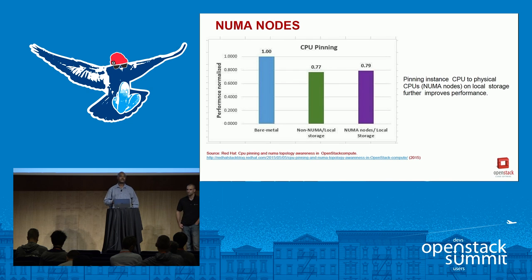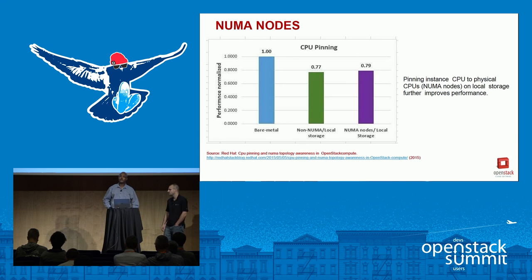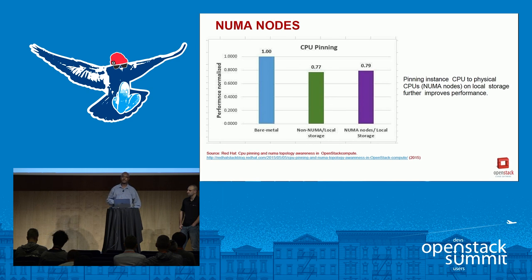Regarding disk pinning: basically what we're doing is making the instances aware of the disk topology. There's a way to configure it so that instead of using logical disks, instances are actually talking directly to the physical disks. That's disk pinning — as opposed to CPU pinning, where you can talk directly to the physical CPUs.